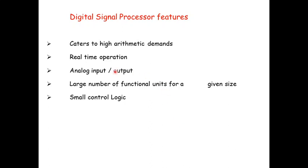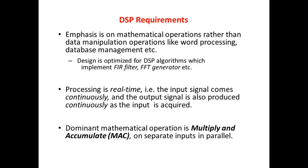A DSP processor's general features are: it has to cater to high arithmetic demands, it has to support real-time operation, it should be able to capture analog input and display its corresponding analog output, it should support a large number of function units for a given size, and it should have control logic to take care of all these operations. The DSP requirements emphasize mathematical operations rather than data manipulation operations like word processing or database management, because DSP algorithms such as FIR filters or fast Fourier transforms concentrate on mathematical operations rather than data manipulation.